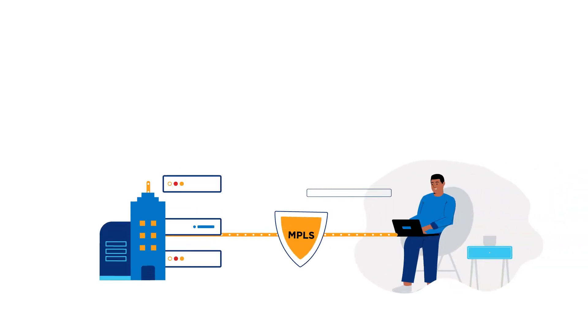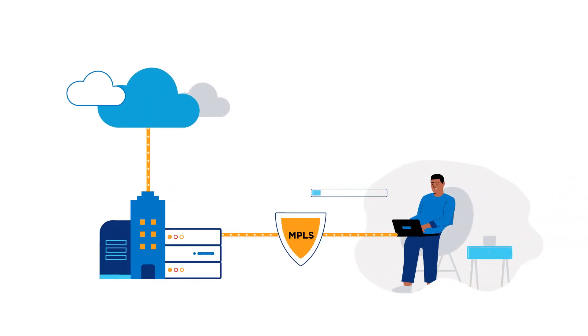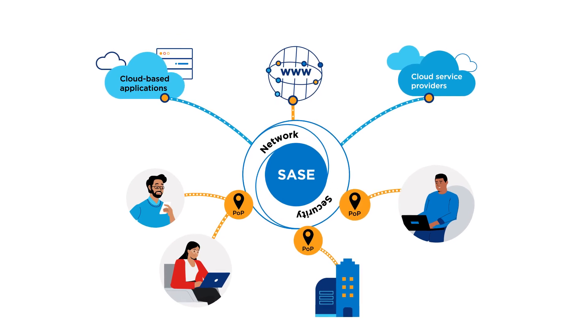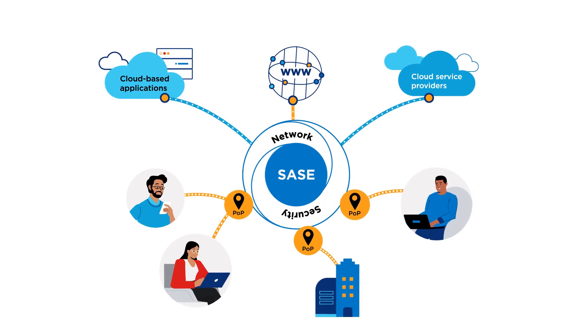You can migrate from MPLS to leverage SASE solutions, routing traffic to a POP instead of backhauling traffic to the data center.